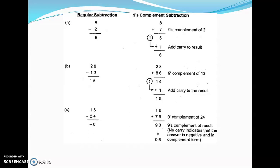In example B, we subtract 13 from 28. Using regular subtraction, it yields 15. In 9's complement subtraction, we calculate the 9's complement of 13 by subtracting 13 from 99, which gives 86. Adding 86 to 28 yields 114. There is an additionally generated carry, so we add that carry to the result and get 15, which matches the regular subtraction method.